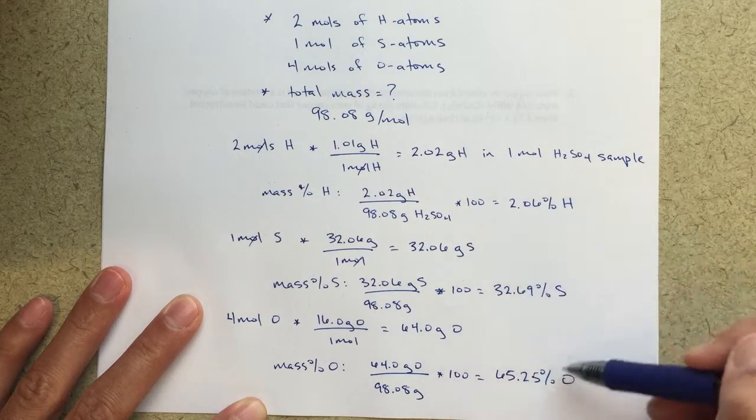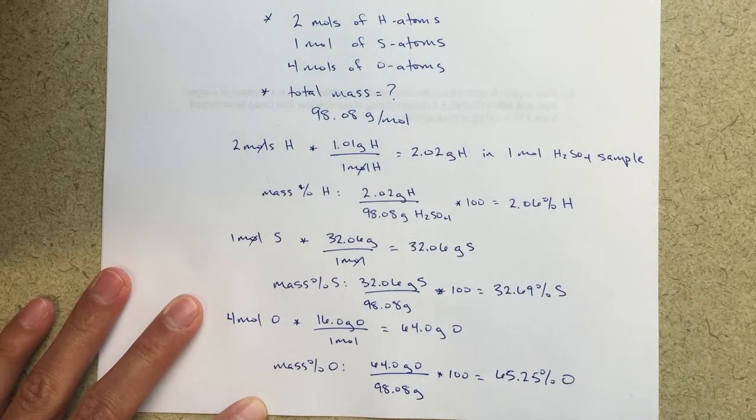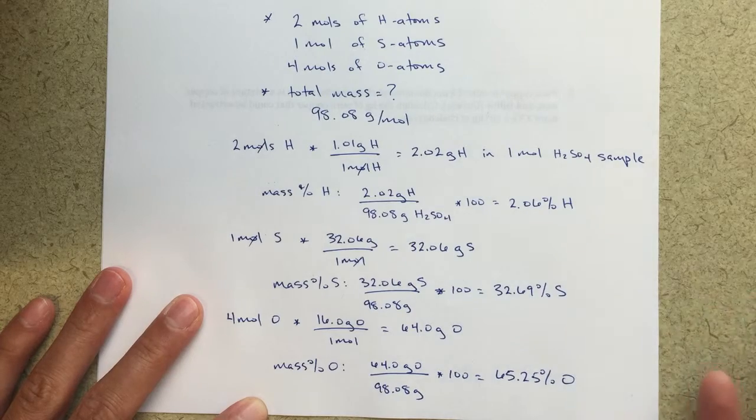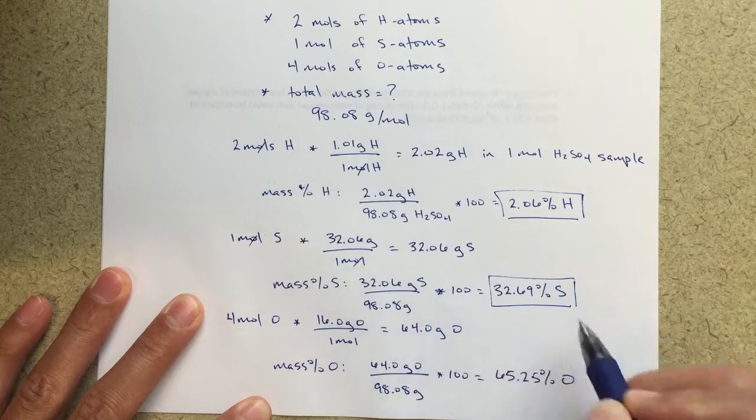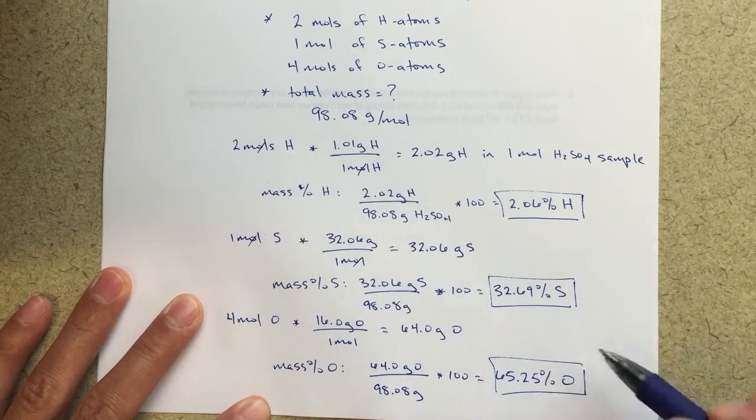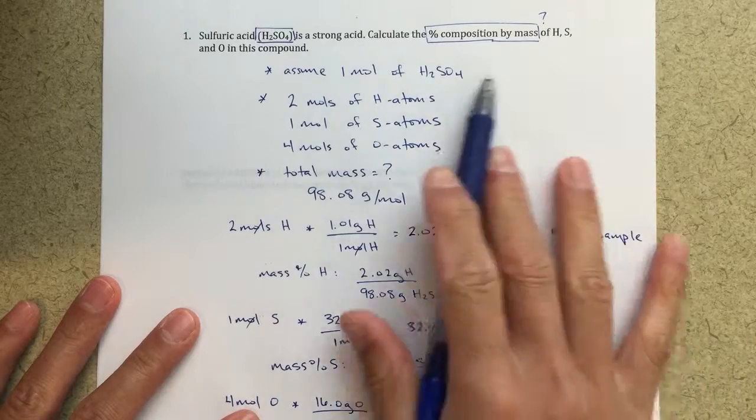And if I add all of these numbers together, my contribution from hydrogen, sulfur and oxygen, these three numbers together should equal 100%. So you can go ahead and double check that, but that should work out. So this is answering the question in full. These would be my three boxed answers for my different percentages of hydrogen, sulfur and oxygen, which is what the question was asking.